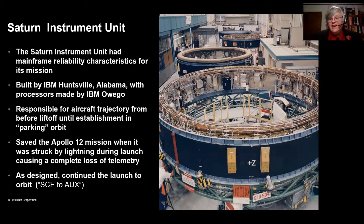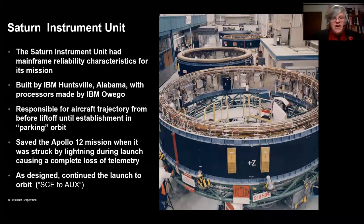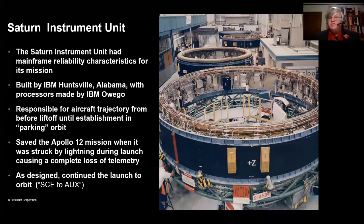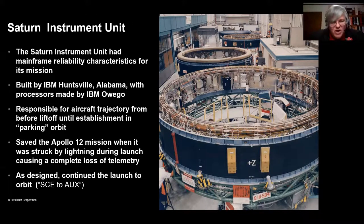The Saturn instrumentation unit saved the Apollo 12 mission. They decided to launch when the weather was questionable — thunderstorms in the distance, some precipitation around the launch area. The Saturn V lifts off and goes for about a minute, and nobody realized that the combustion generating all that thrust creates a gigantic conductive cloud. There's a lightning strike and suddenly they lose all telemetry data. The videos are out on YouTube — you can literally see the controllers jumping back, never having seen this happen before. The screens go completely blank. But the Saturn instrumentation unit kept the Saturn V going all the way into the parking orbit and gave them time to recover.